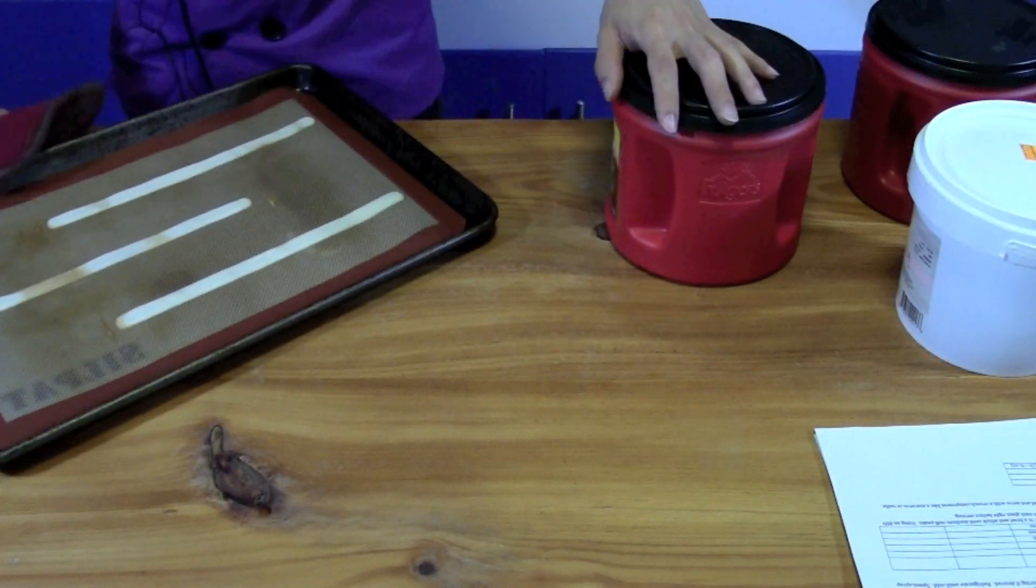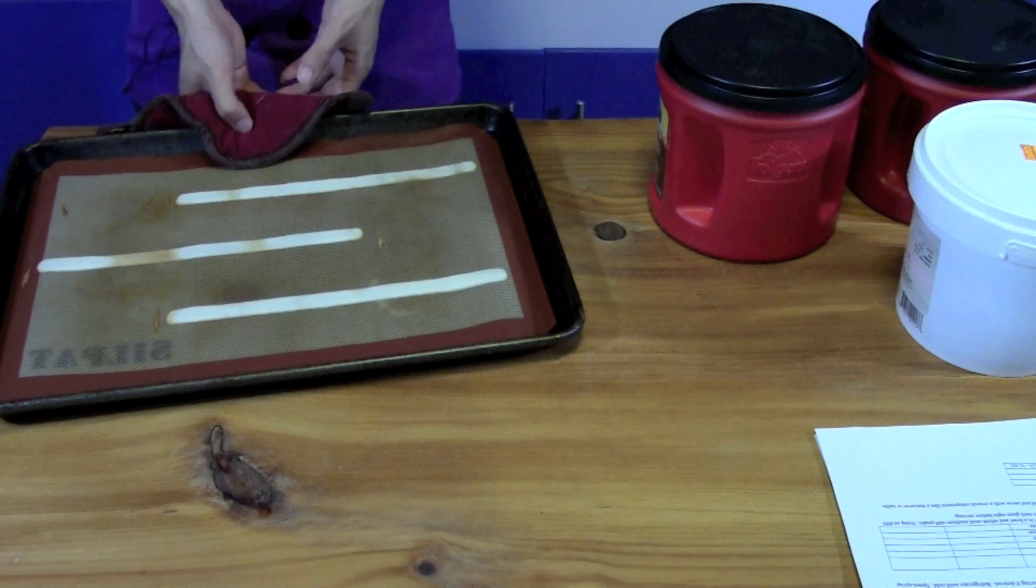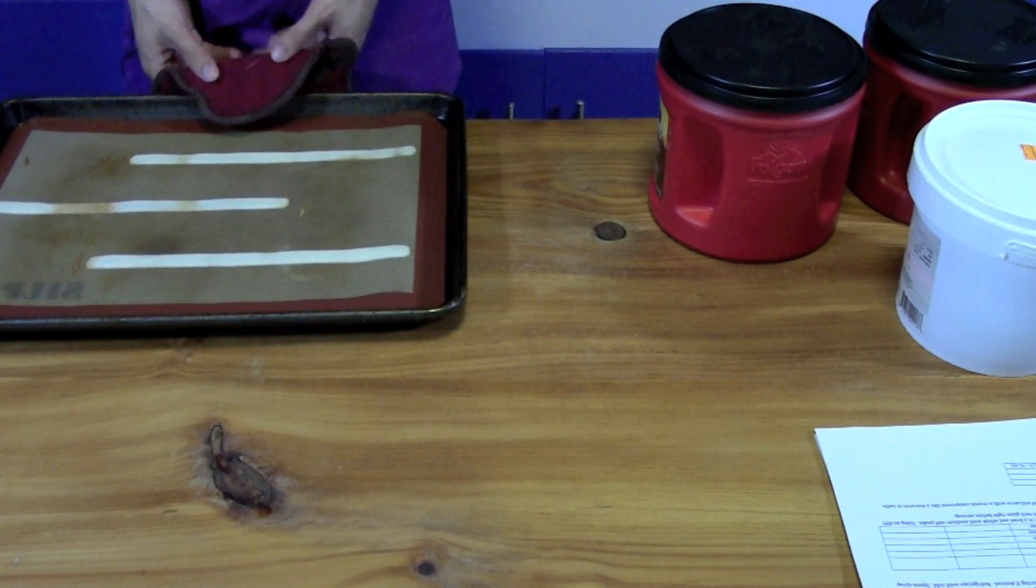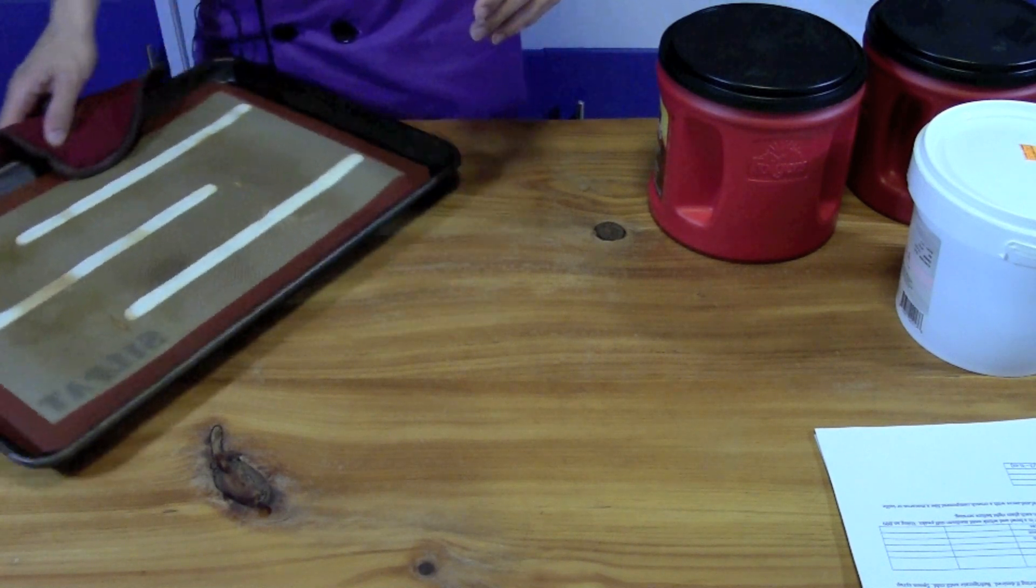So you can see that some of the patches where it was just a little bit thinner have gotten a little bit darker and they're going to continue to cook for a little bit. I'm going to let it cool down on the sheet pan for just a second, so that way it's a little bit firmer.